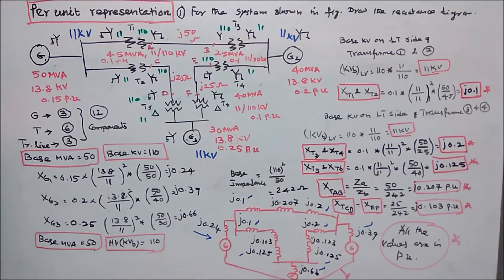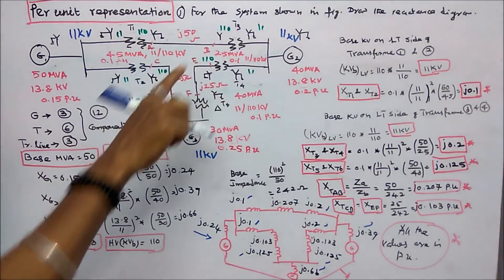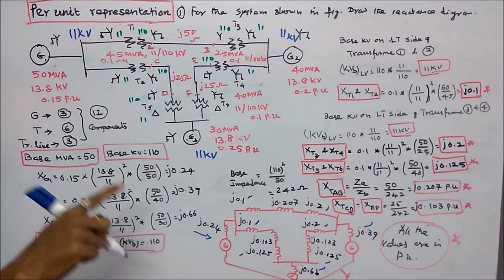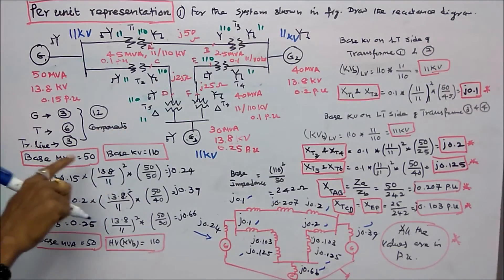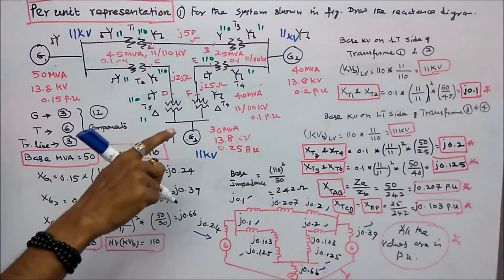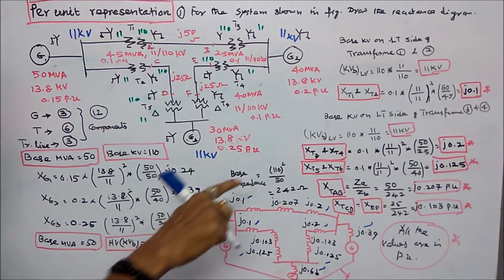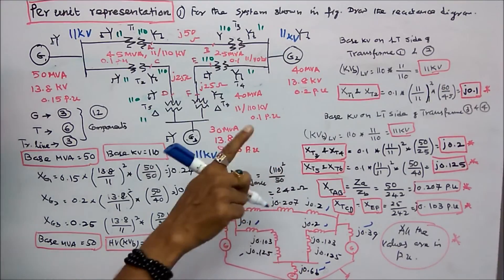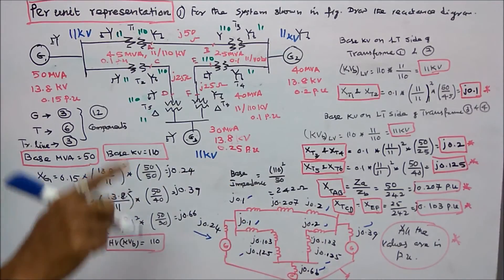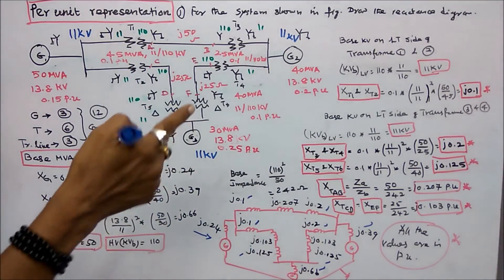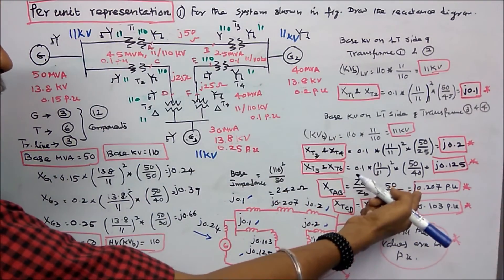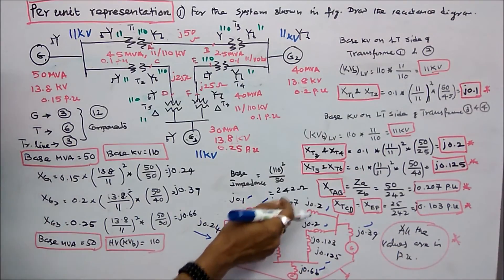Next, the per unit reactance of the transmission lines. Base kV is 110, base MVA is 50. Base impedance = 110² / 50 = 242 ohms. For transmission line AB, actual value is 50 ohms. Per unit = 50 / 242 = j0.207.